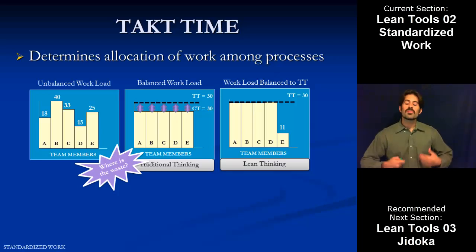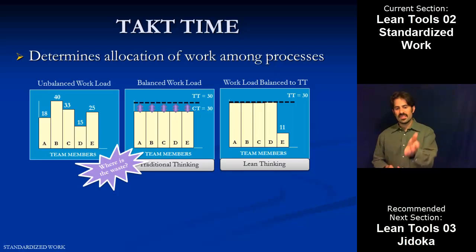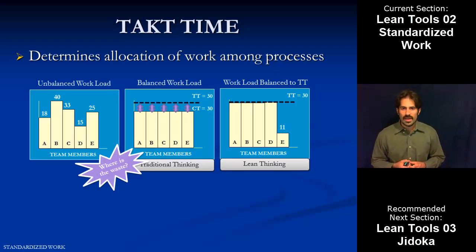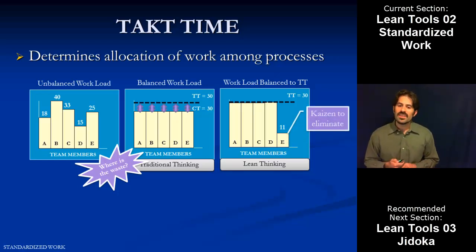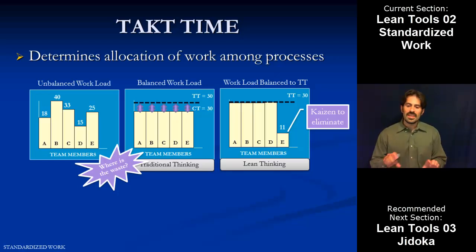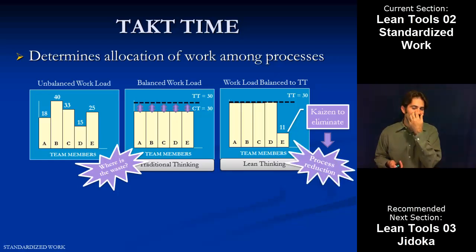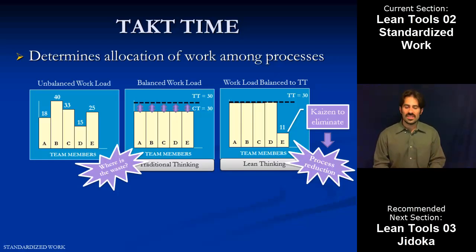What we want to do with lean thinking is balance the workload to takt time. In the example on the right, team members A through D have their work processes full all the way up to takt time — a full day's work. That means process E only has a little bit of time left over; it's not a full process anymore. That's where we get into Kaizen and continuous improvement: now that we've balanced everything else to takt time and have a little process left over, we use Kaizen to eliminate that process altogether — reduce time so we don't need that last segment. That's how we build process reductions, eliminate steps, and eliminate work centers.